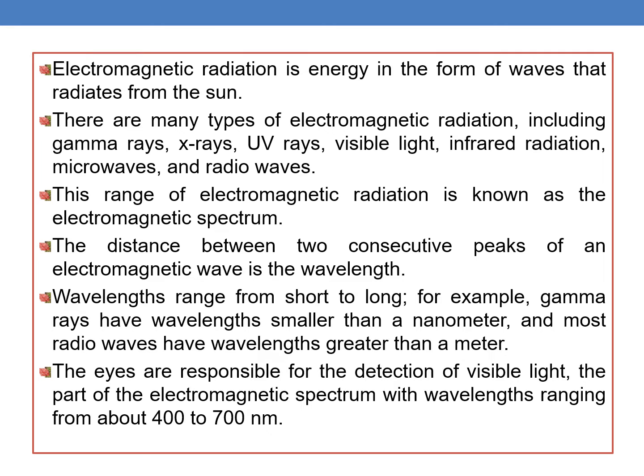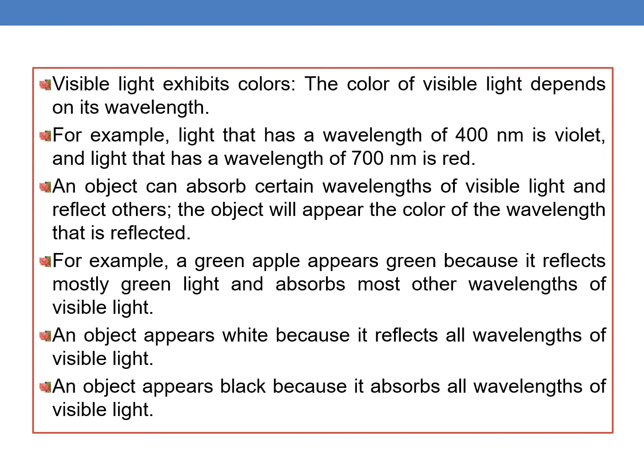The eyes are responsible for the detection of visible light — hence the term visible light — which is the part of the electromagnetic spectrum with wavelengths ranging from 400 to 700 nanometers. Visible light exhibits colors, and the color of visible light depends upon its wavelength. For example, light with a wavelength of 400 nanometers is violet, and light with a wavelength of 700 nanometers is red.